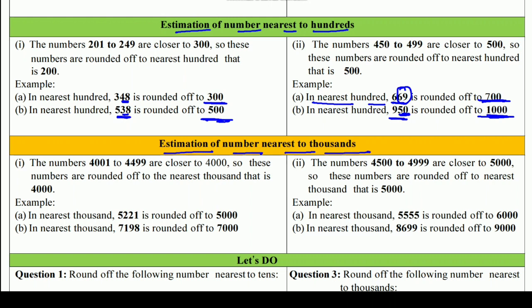Estimation of number nearest to 1000: 1000 में करना है तो last के 3 digits देखने हैं। अगर वो 500 से कम हैं, तो पहले वाले 1000 पर; 500 या उससे ज़्यादा हैं, तो next वाले 1000 पर। In nearest 1000: 5,221 is rounded off to 5000 — क्योंकि 221 है जो 500 से कम है। और 5,555 is rounded off to 6000 — क्योंकि 555 है जो 500 से ज़्यादा है।